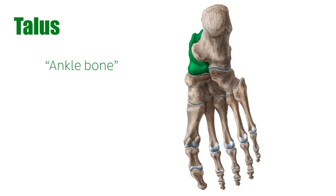The talus is an important bone for the stability of the ankle due to its central location between the ankle joint, the subtalar joint — which is between the talus and the calcaneus — the talo-calcaneo-navicular joint, which joins the head of the talus with the calcaneus, the plantar-calcaneo-navicular ligament, and the navicular bones.